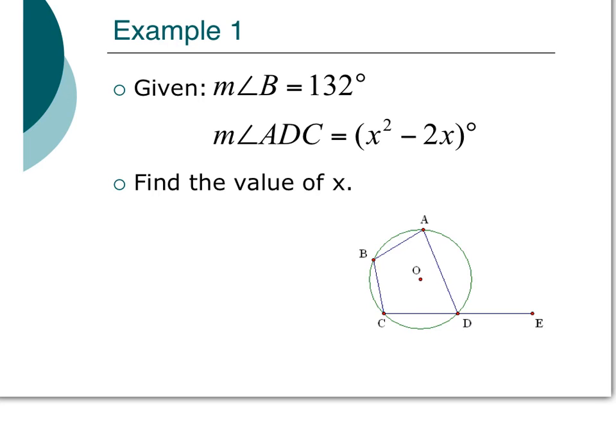In this problem, we're given an inscribed quadrilateral and we want to find the value of X. I'm given angle B is 132, so this is 132. And then I have angle ADC which is X squared minus 2X. Well what do I know about these two angles? They're not congruent, but they are supplementary. So I'm going to have X squared minus 2X, then I can add the 132, and I know that these two added together will give me 180. Now when I see that X squared, I know that I'm in for some factoring, most likely, or quadratic formula, your choice. I'm going to do X squared minus 2X, and then I have minus 48 when I subtract that 180 over.